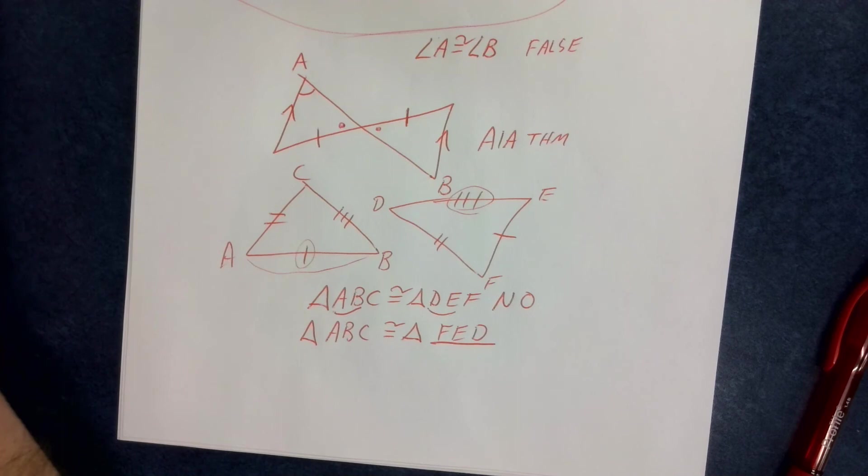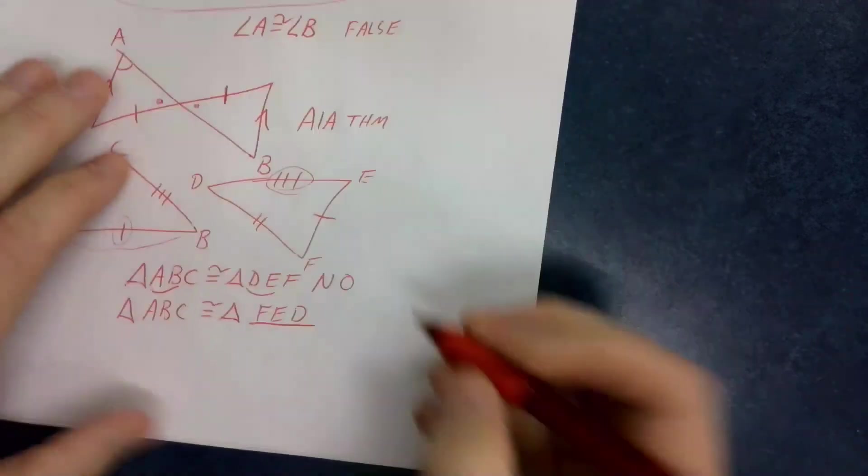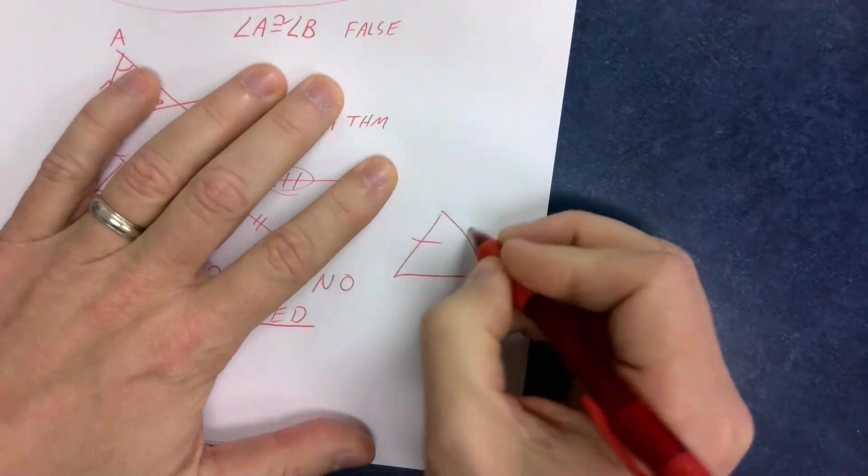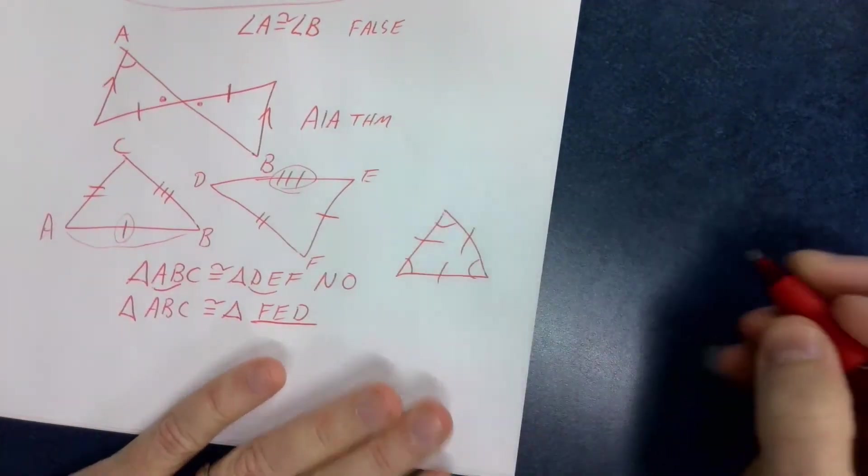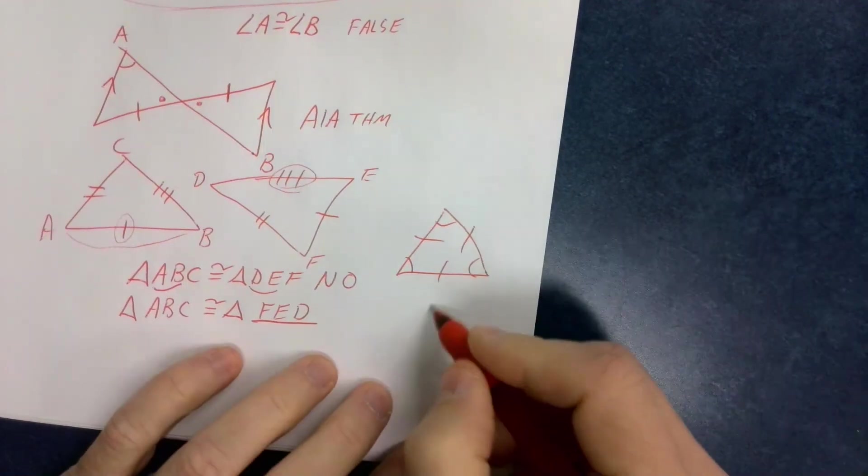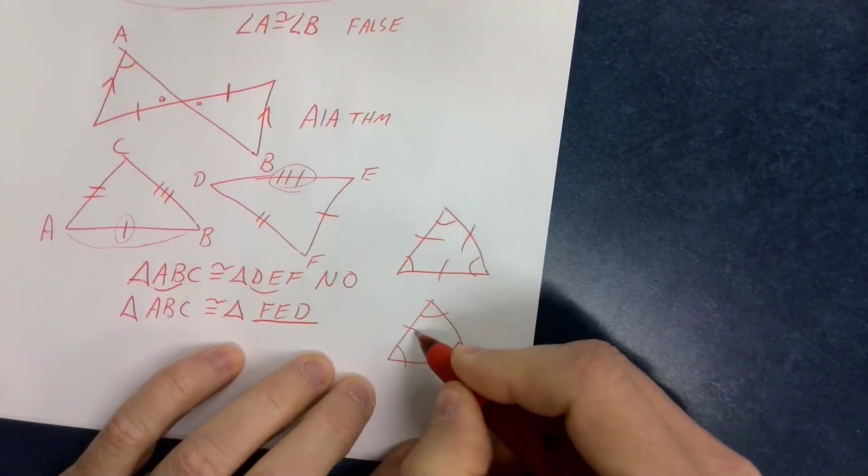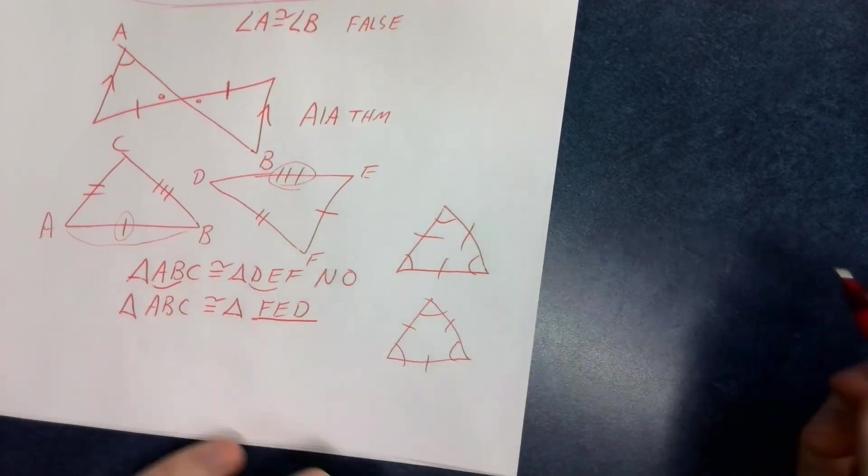You guys know that if I have an equilateral triangle, that that means it has to be equiangular. And vice versa, if it's equiangular, it must be equilateral.